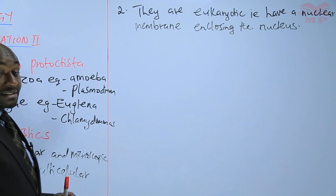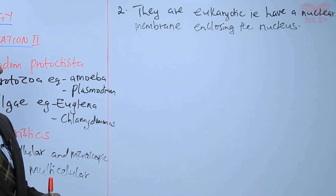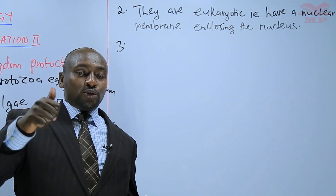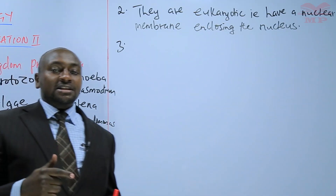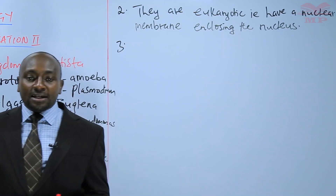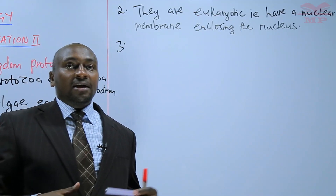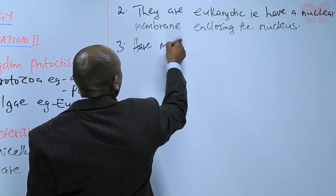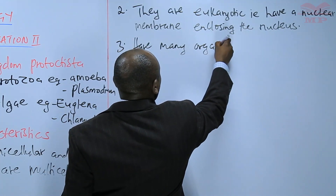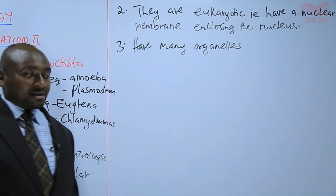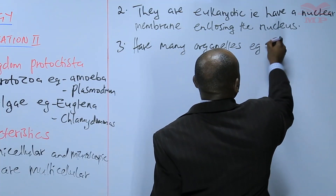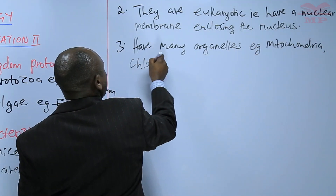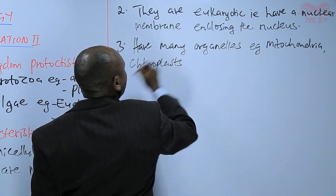The next characteristic is that they have many organelles. Unlike kingdom Monera that we saw earlier, kingdom Protoktista organisms have many organelles, such as mitochondria and chloroplasts. So we can say that they have many cell structures — for example, mitochondria, chloroplasts, et cetera.